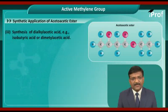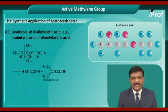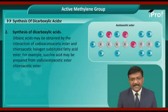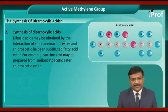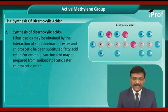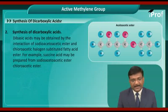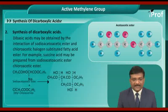The third synthetic reaction is the synthesis of dialkyl acetoacetic acid, which gives isobutyric acid or dimethyl acetoacetic acid along with the formation of acetic acid. The second type of reaction is the synthesis of dicarboxylic acids. Dibasic acids may be obtained by the interaction of sodium acetoacetic ester and halogen-substituted fatty acid esters. For example, succinic acid may be prepared from sodium acetoacetic ester and chloroacetic ester.